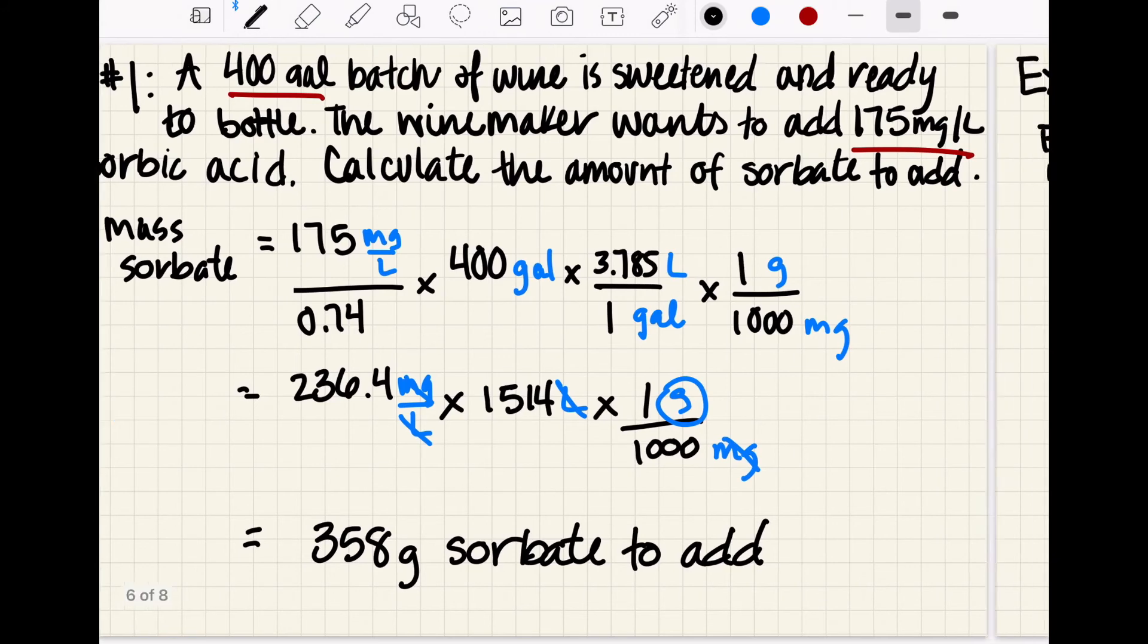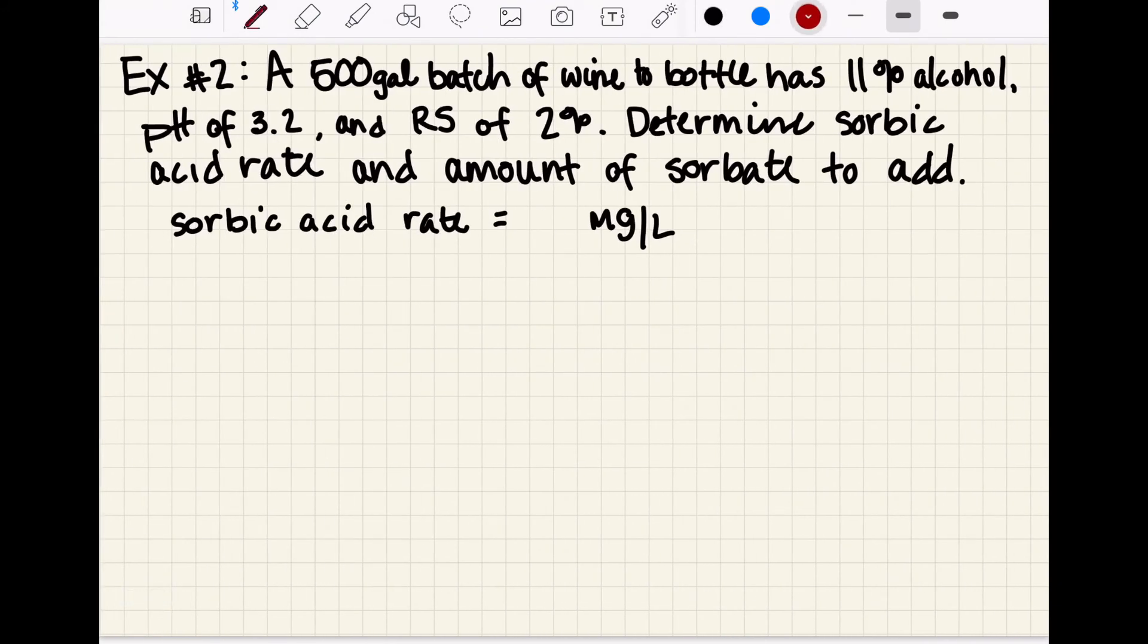Okay, I have one more example for us to work through here, and this one's a little bit different because this time we need to determine the sorbic acid rate. So in the information we have the alcohol percentage as well as the pH to help us determine somewhere in the range up to not more than 300 milligrams per liter of sorbic acid because that's the TTB legal limit. So we have a 500 gallon batch of wine with 11% alcohol and a pH of 3.2. The residual sugar is going to be 2%, so we need to determine our sorbic acid rate and the amount of sorbate to add.